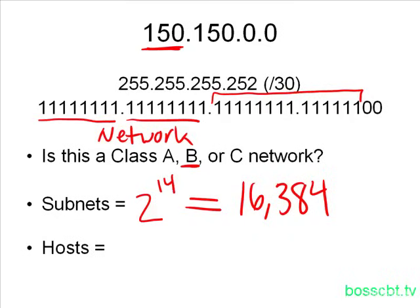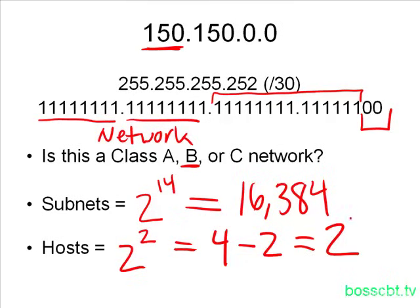So, the formula there is 2 to the number of host bits, here there aren't very many, there's only 2 left. 2 to the power of 2 equals 4, and then we subtract 2, one for the subnet number, one for the broadcast.